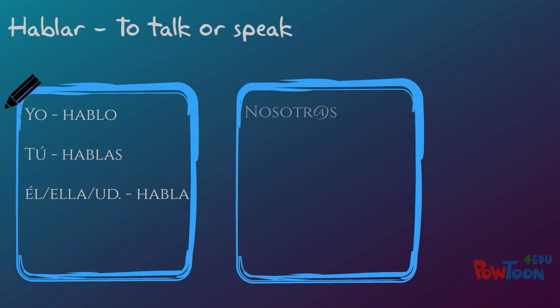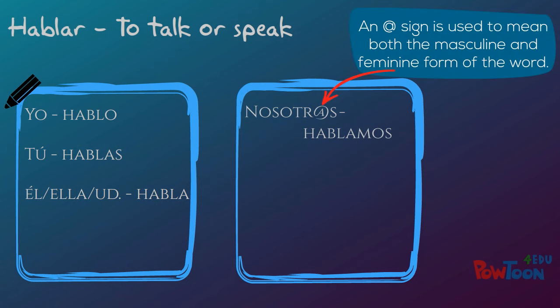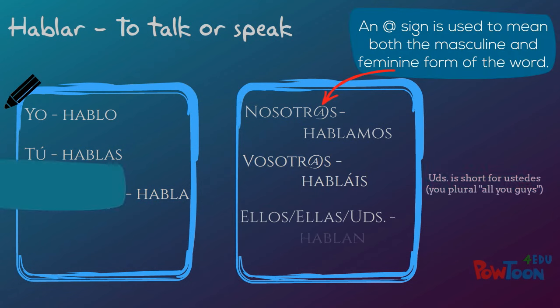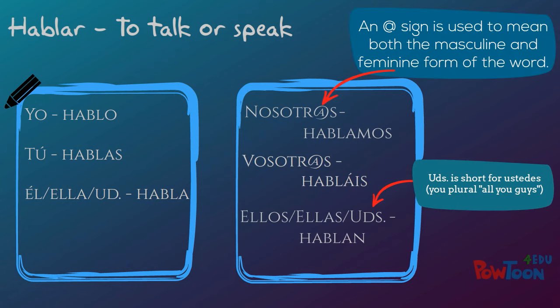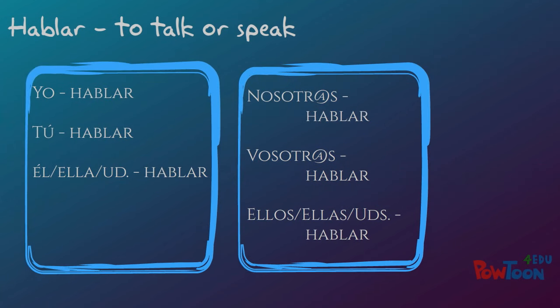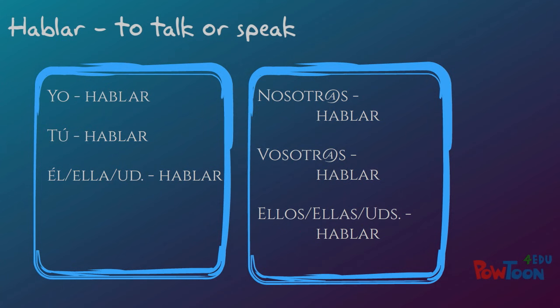Nosotros hablamos, we talk; and ellos, ellas, ustedes hablan — they talk, or you all talk. Remember, we only need to drop the last two letters off the end of the verb, and then make sure the ending of the verb matches the pronoun we want.